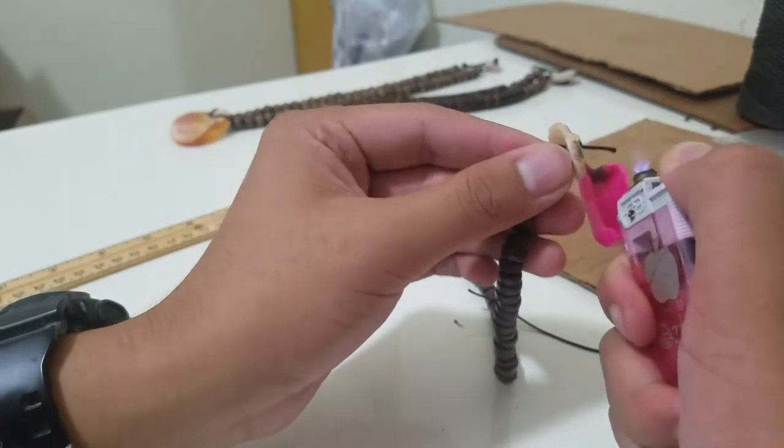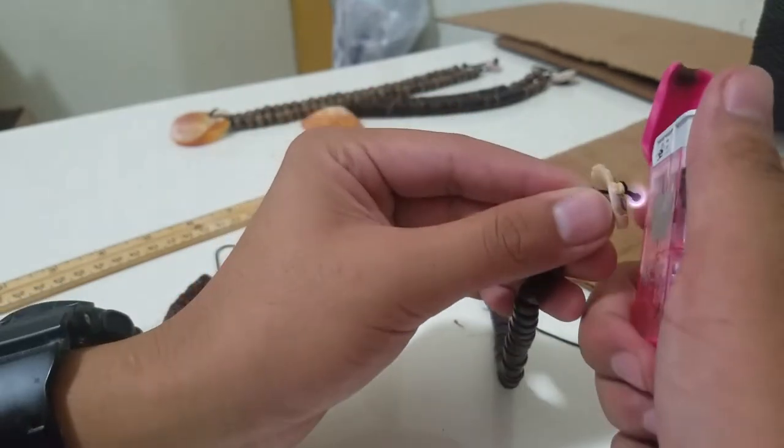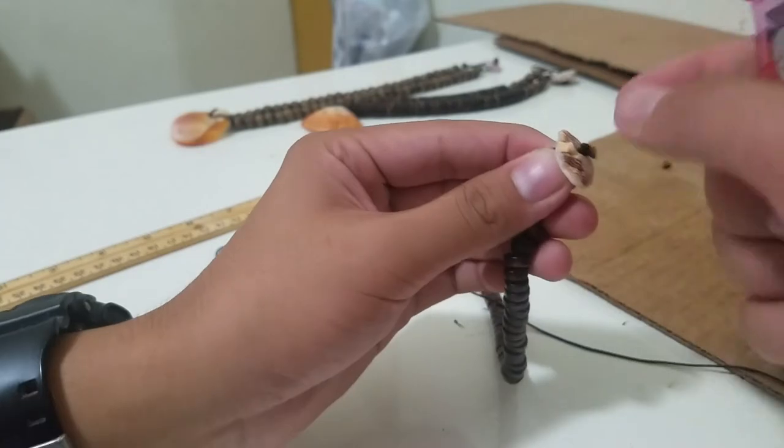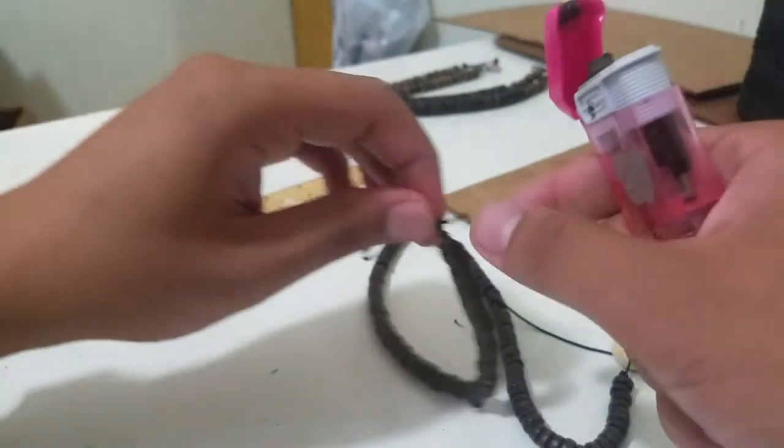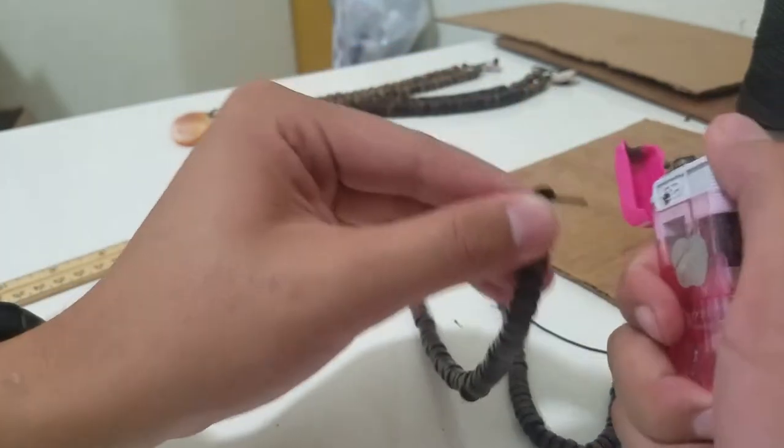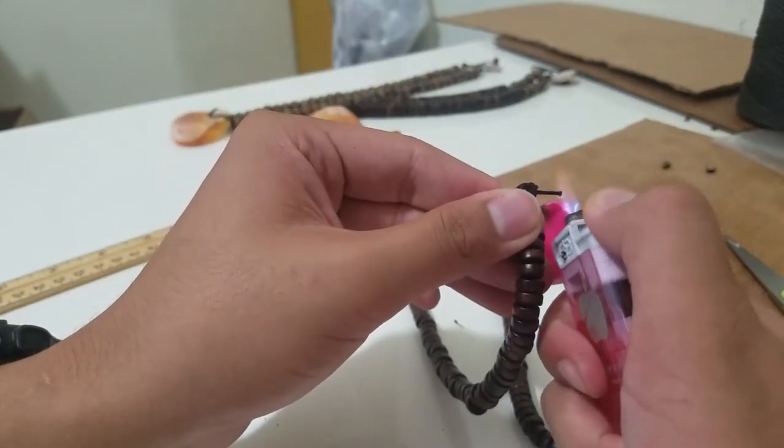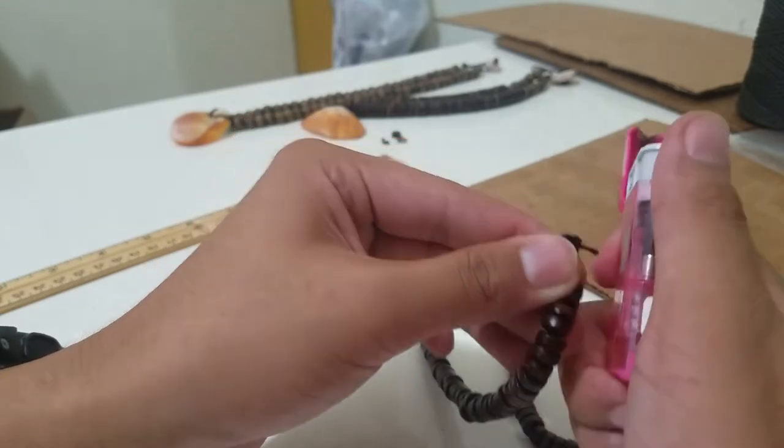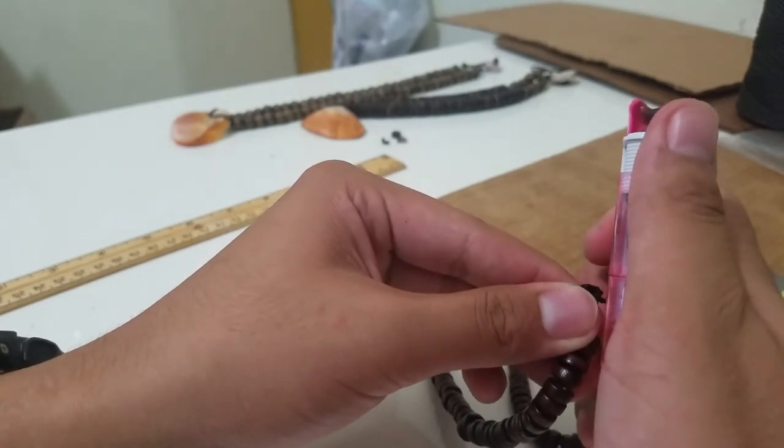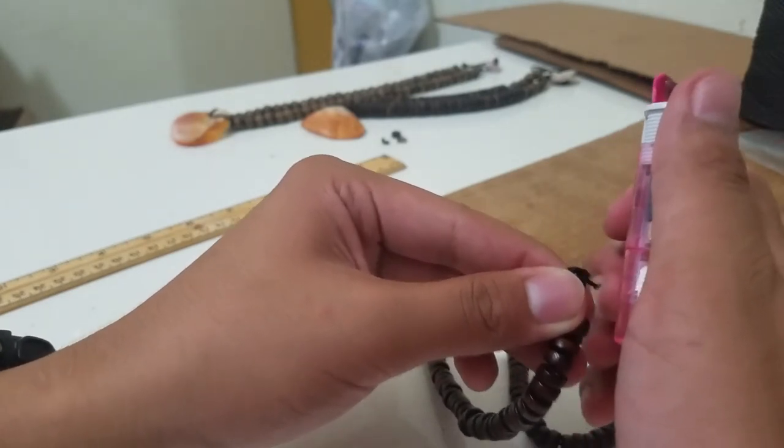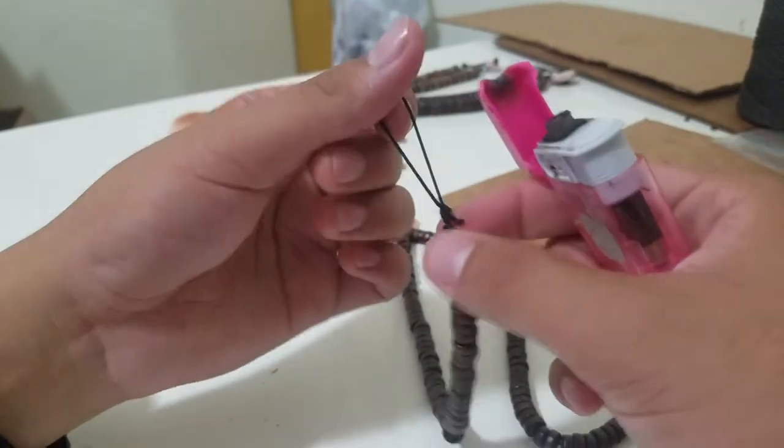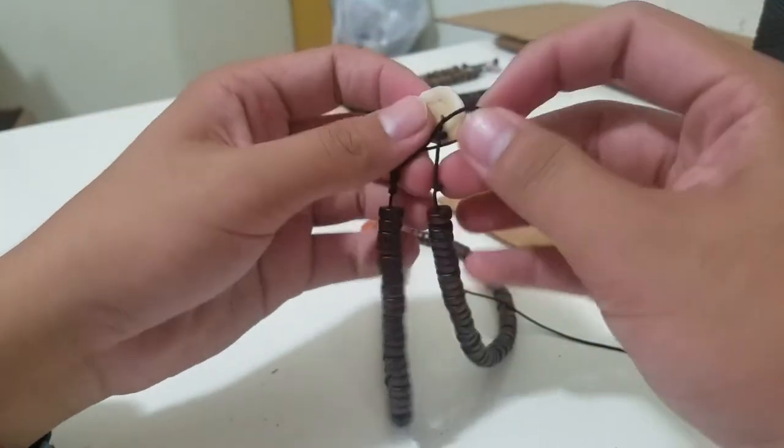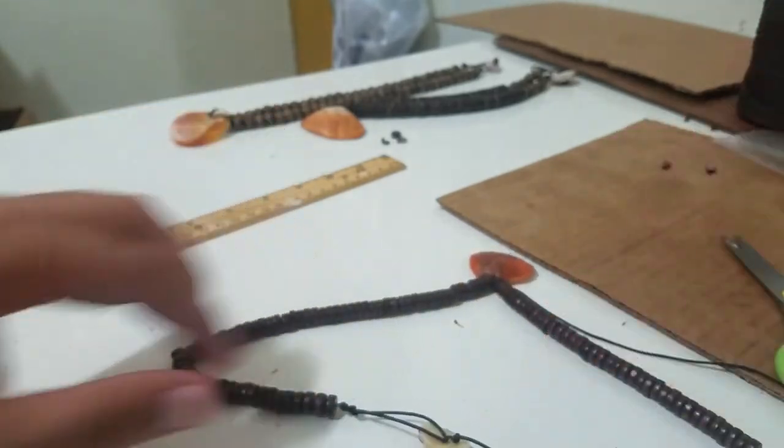So then I'm going to burn it for security purposes. Just like that. Okay, and that's how you do it. Just put the clasp through the overhand loop knot. Then you have yourself a necklace. Thank you for watching.